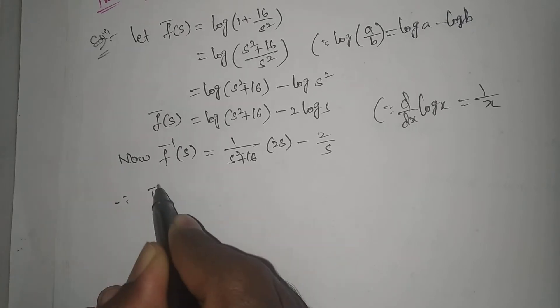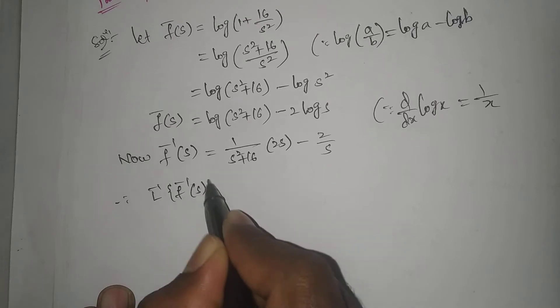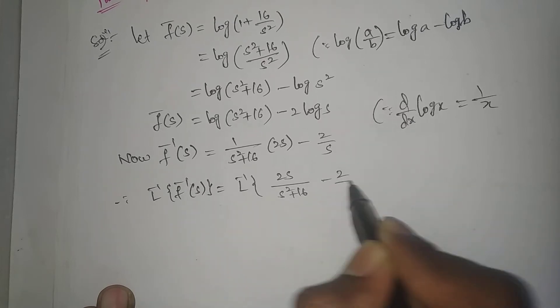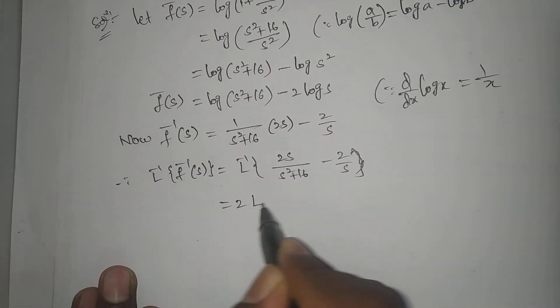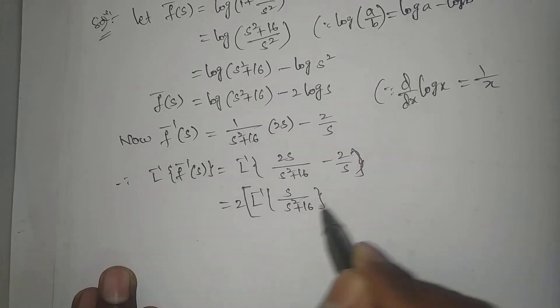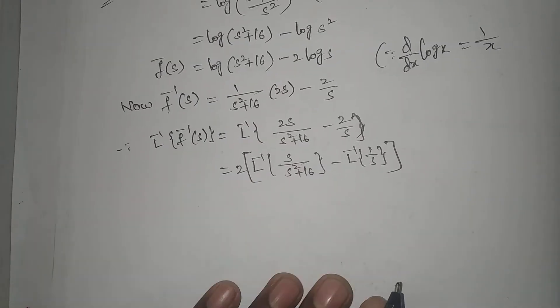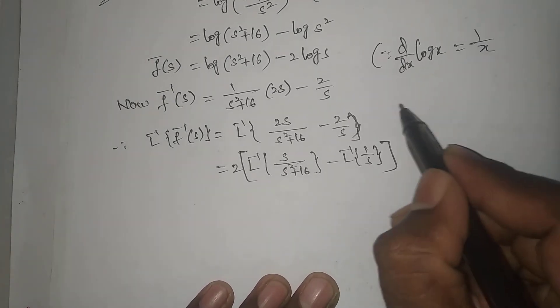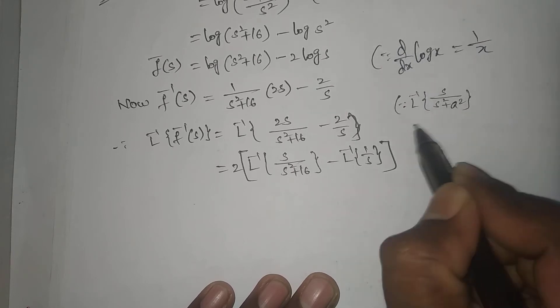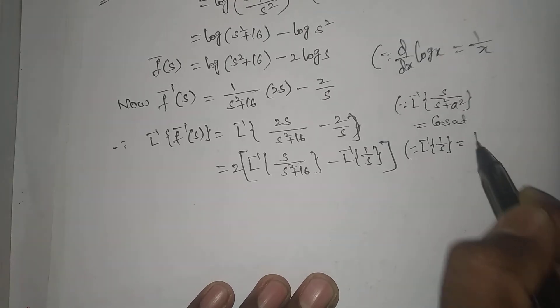Now taking L inverse on both sides: L⁻¹{2s/(s² + 16) - 2/s} = 2 common here. L⁻¹{s/(s² + a²)} = cos(at), and L⁻¹{1/s} = 1.